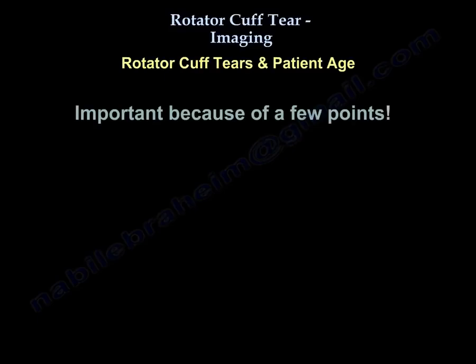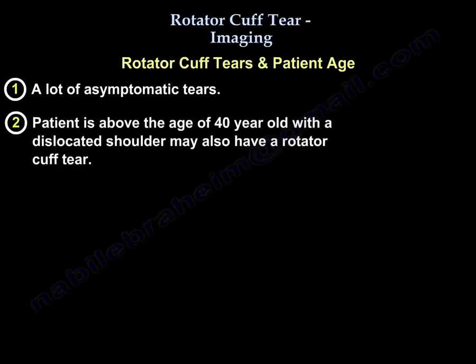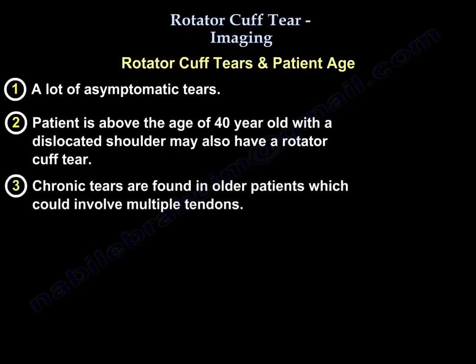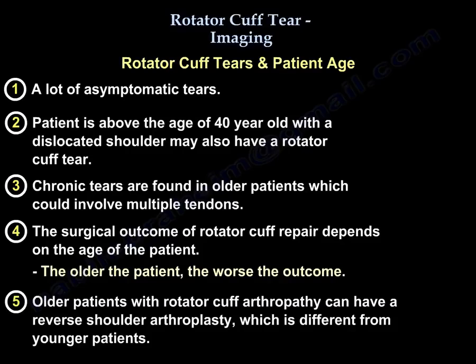Age is important with cuff tears for several reasons. Number one, there are many asymptomatic tears. Number two, if you are above the age of 40 and you dislocate the shoulder, you may have a cuff tear. Number three, in older patients you will find chronic tears that could involve multiple tendons. Number four, the outcome of rotator cuff repair depends on age — the older the patient, the worse the outcome. Number five, older patients with cuff tear arthropathy can have a reverse shoulder replacement, which is different from younger patients.